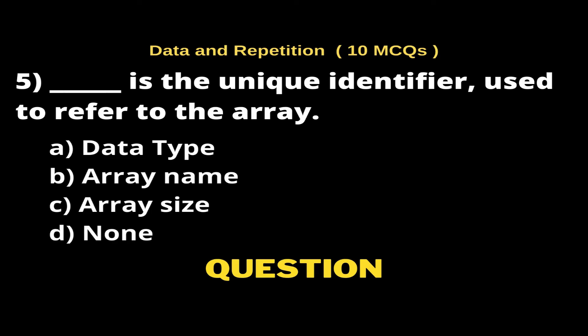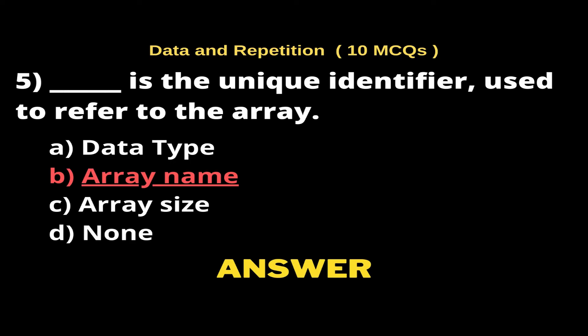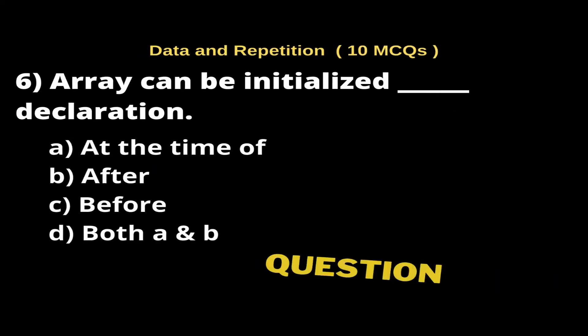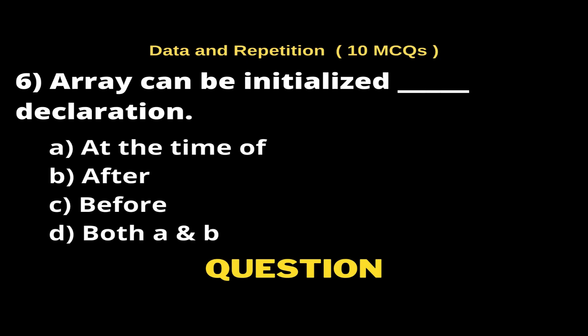Question 5: ___ is the unique identifier used to refer to the array. Options: A) Data type, B) Array name, C) Array size, D) None. The right answer is Option B, Array name.